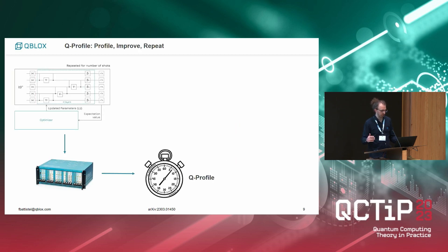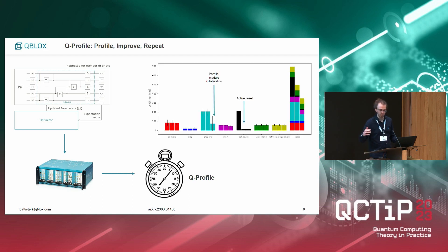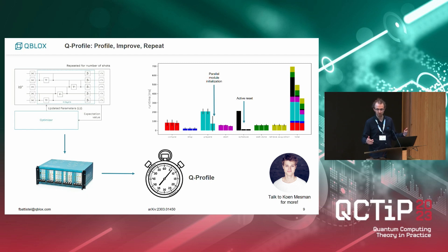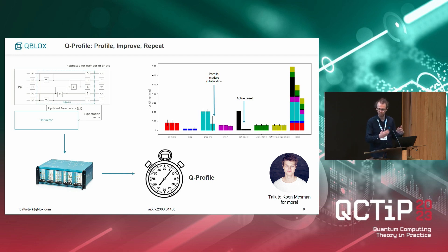Our approach has been to make the first steps to improve this. The first step is to characterize in detail the various steps that happen in the electronics. We profile it with an open-source software tool we call Q-Profile — you can ask more to Kun, who had a paper on this yesterday as well. There are various steps: you compile, you prepare the modules themselves, then collect measurements. We characterized it and made two improvements: one is that with active reset we save a lot of time in waiting for T1 decay, and then we parallelize the initialization of these modules. We have more to come.